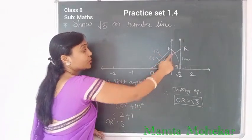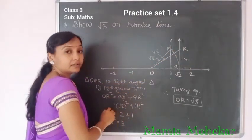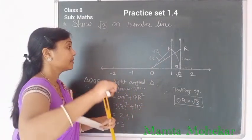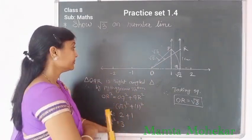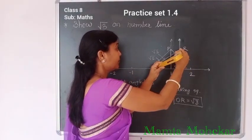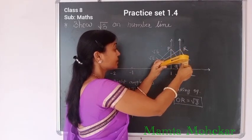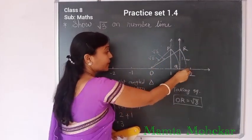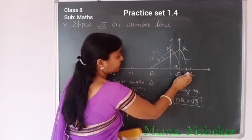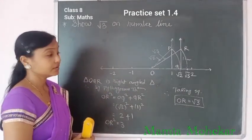So OR is equal to root 3. We want this point on the number line, so take OR as radius in the compass, take the distance OR, and make one arc on the number line. This point is root 3. In this way, we can show root 3 on the number line.